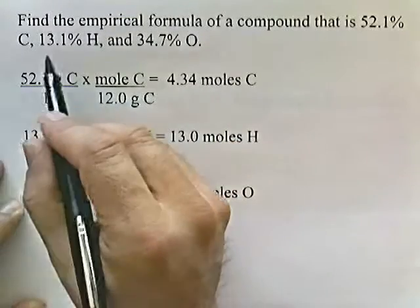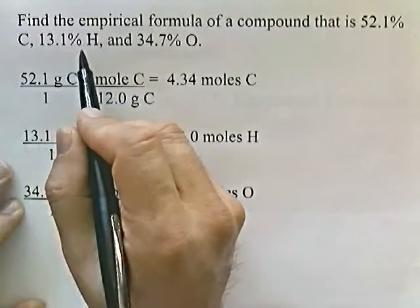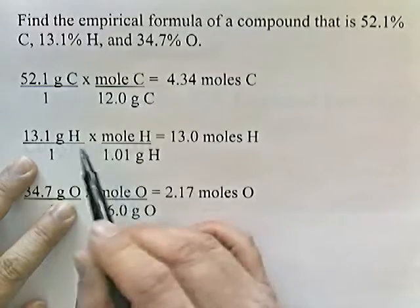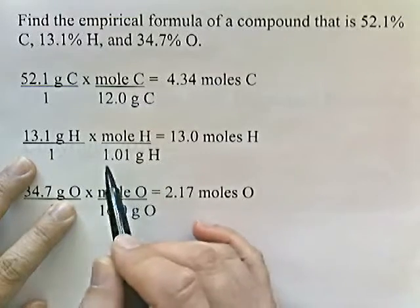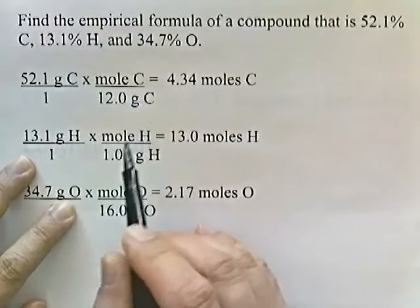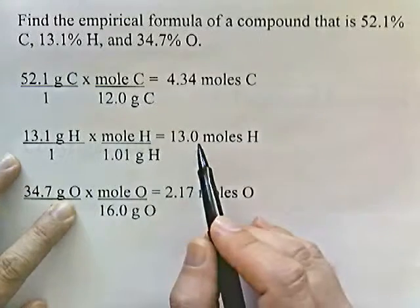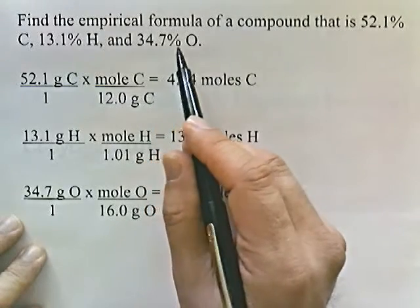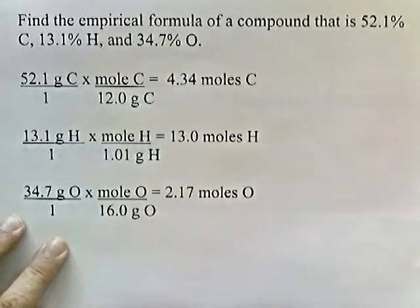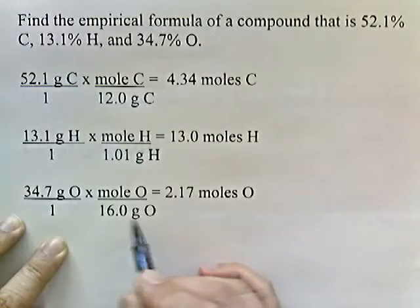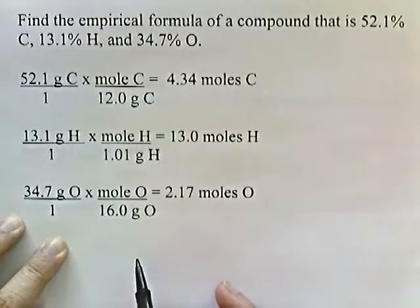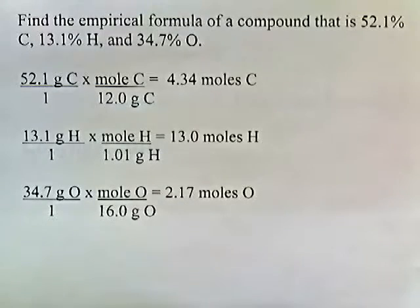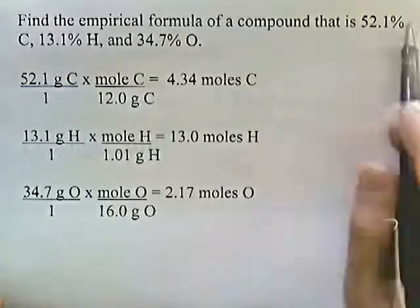And then we have 13.1 grams of hydrogen. So we'll divide that by 1.01, taken off the periodic chart. One mole of hydrogen is 1.01 to three significant digits. Anyway, that'll give us 13 moles of hydrogen. And then 34.7 grams of oxygen. On the periodic chart, 16 grams of oxygen make a mole of oxygen. So if we convert that, that gives us 2.17 moles of oxygen. So we've converted all these percentages into moles.